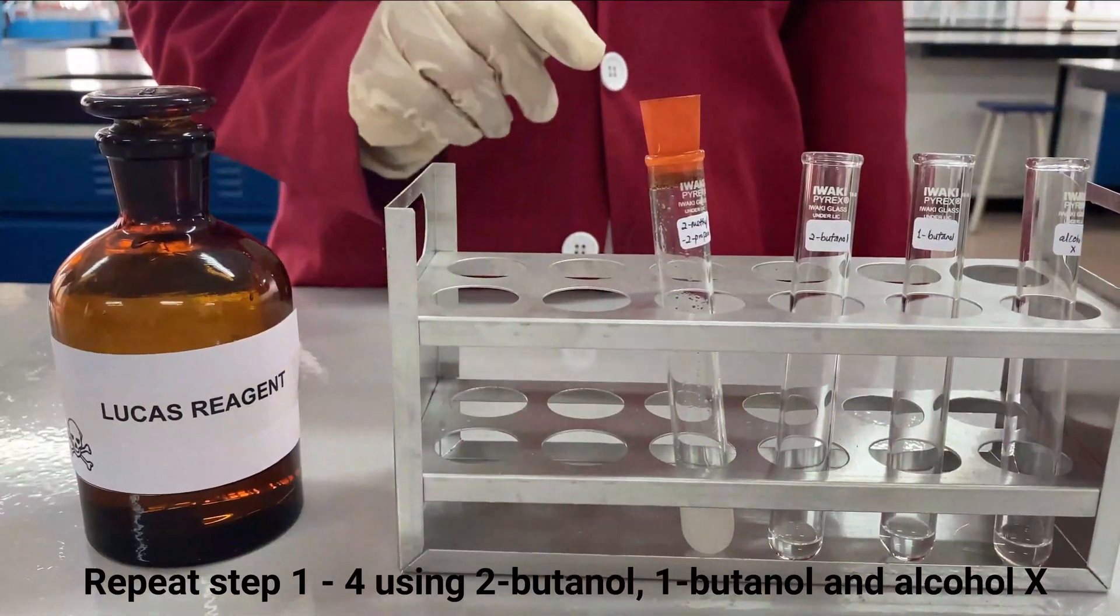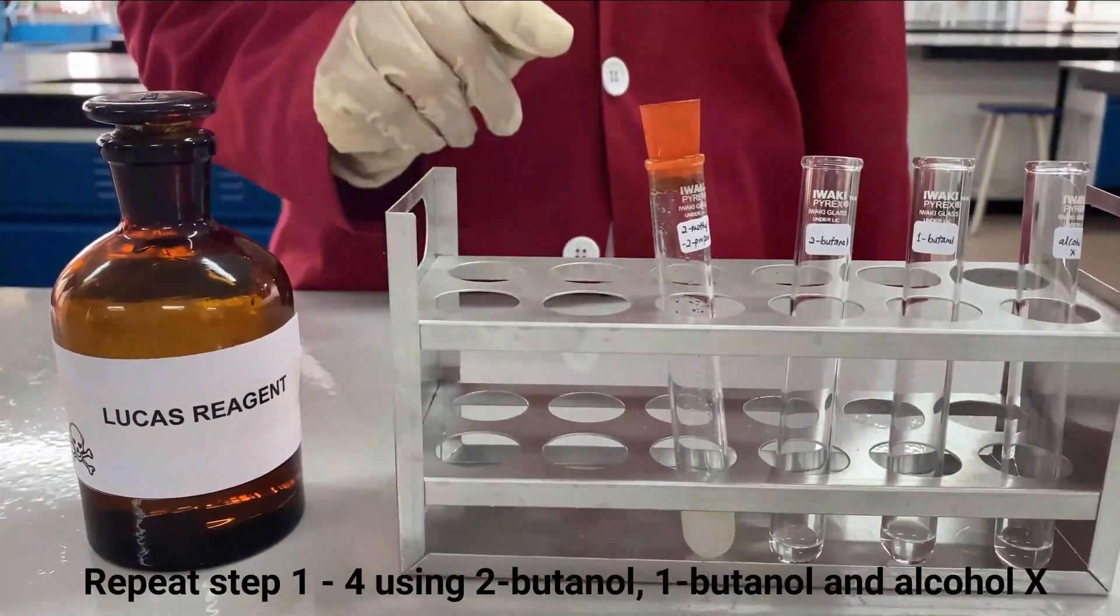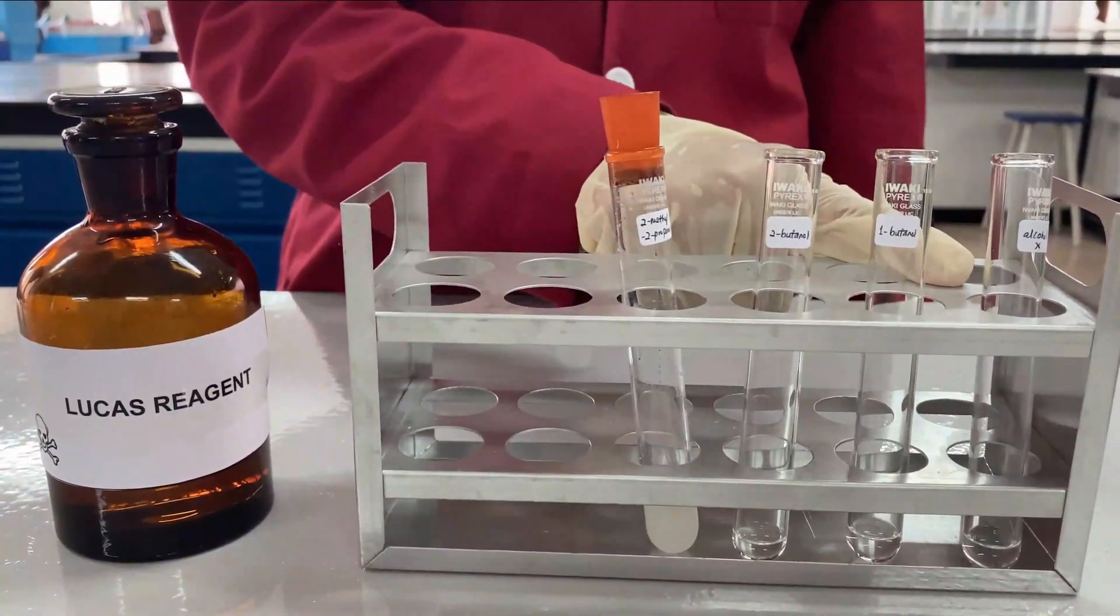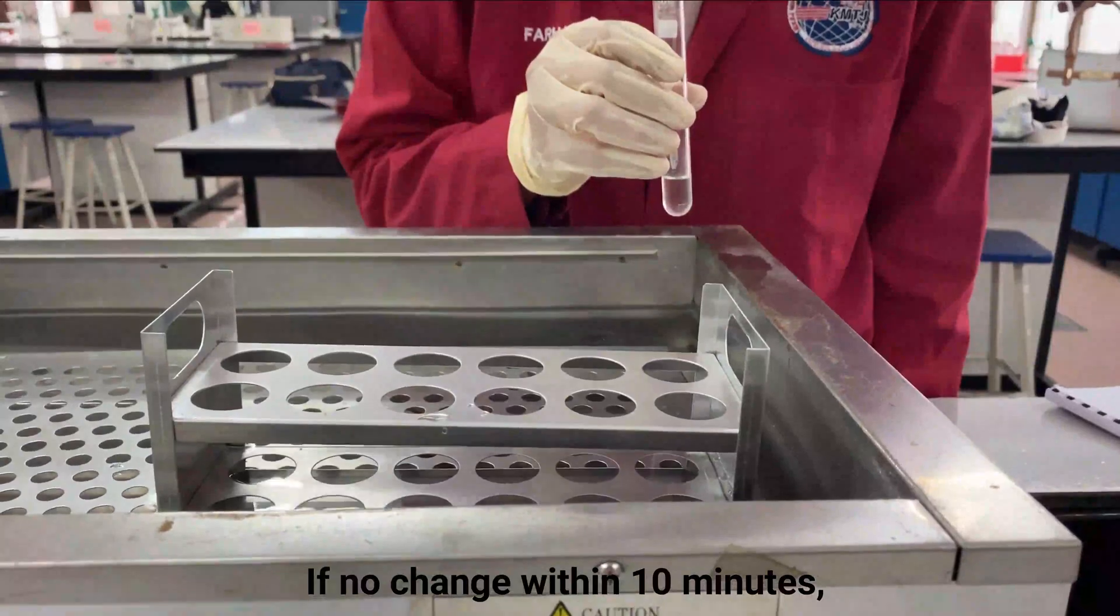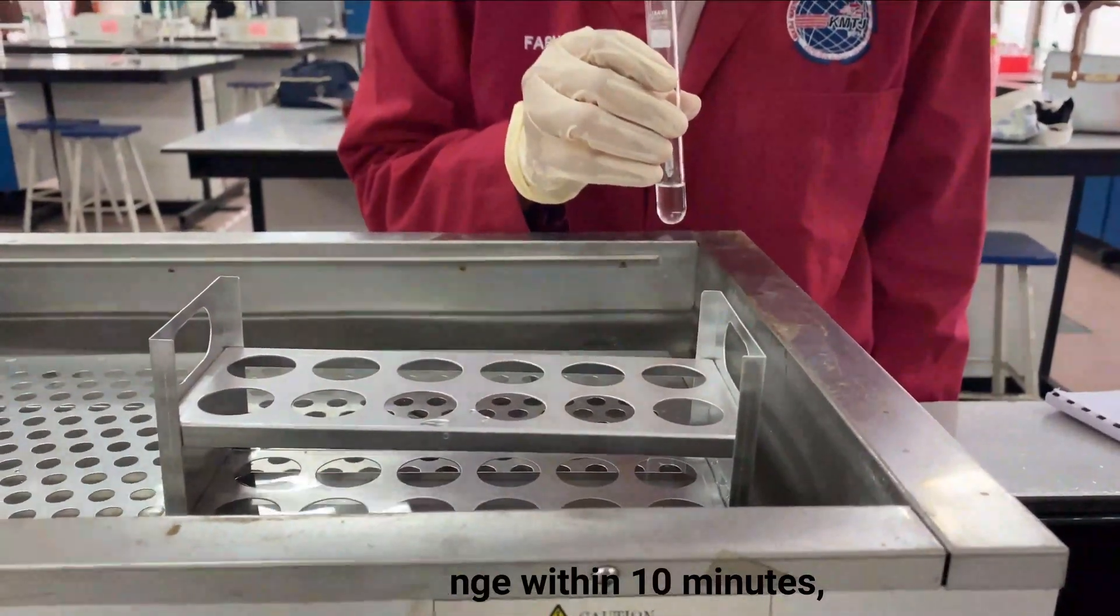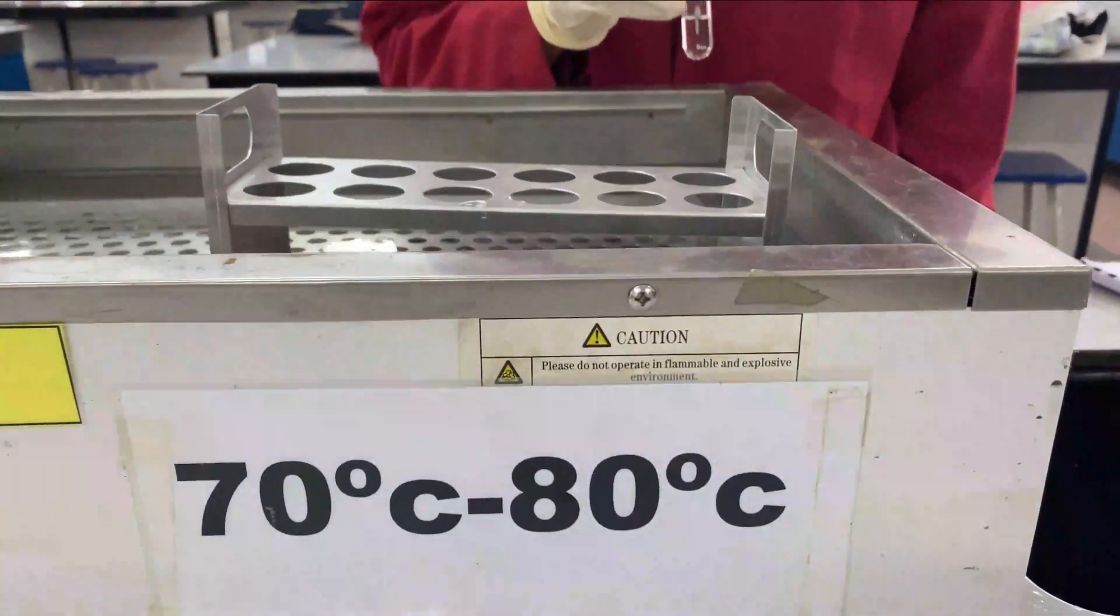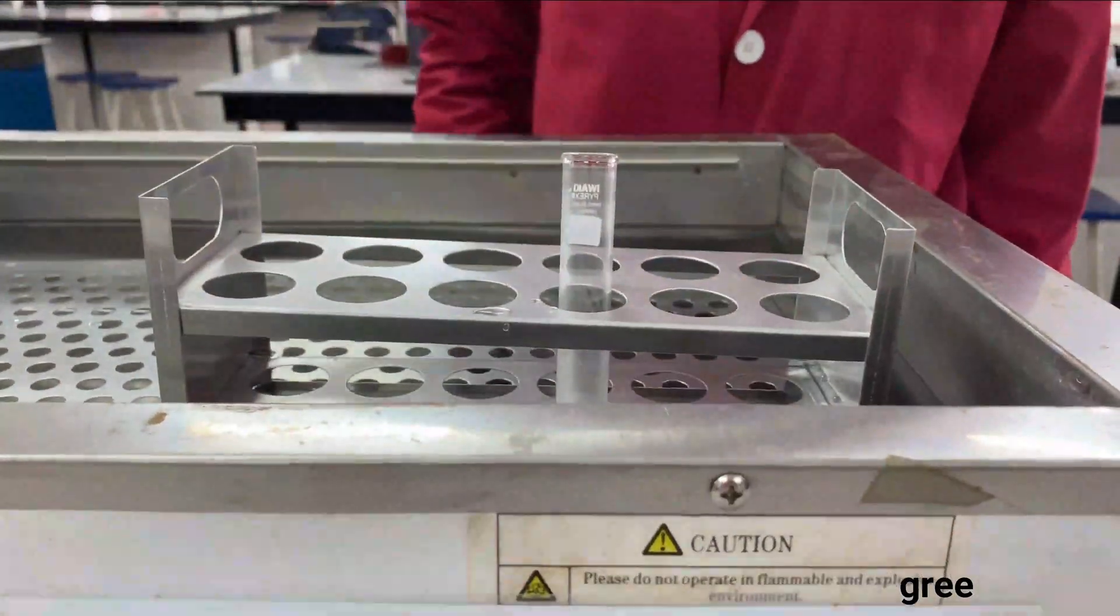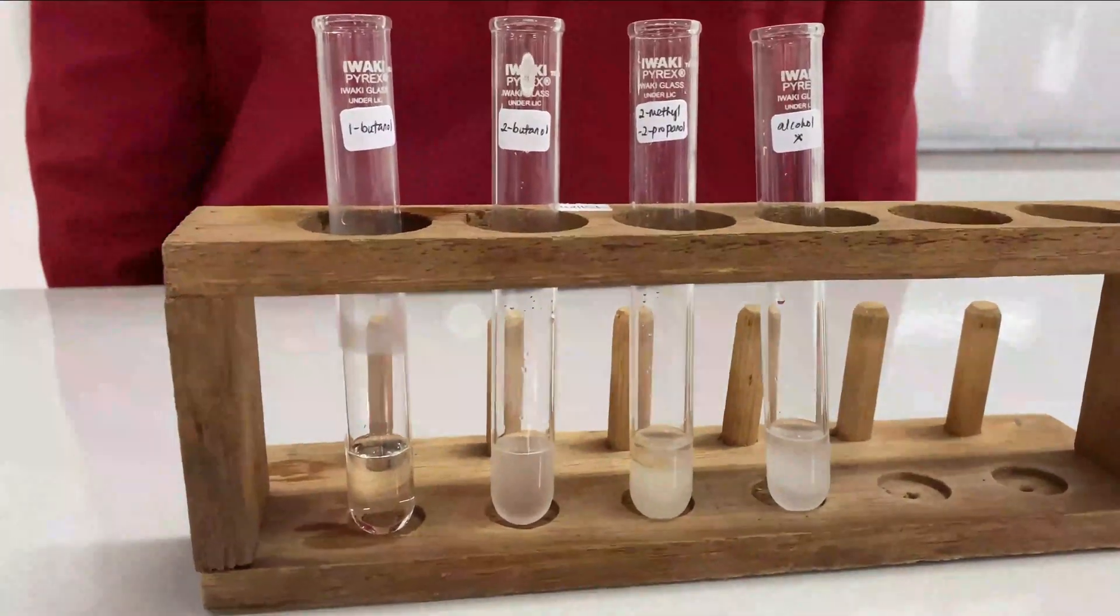Next, repeat steps 1 through 4 using 2-butanol, 1-butanol, and alcohol X. If there is no change within 10 minutes, place the test tube in the water bath at 70 to 80 degrees Celsius. Finally, deduce the class of alcohol X.